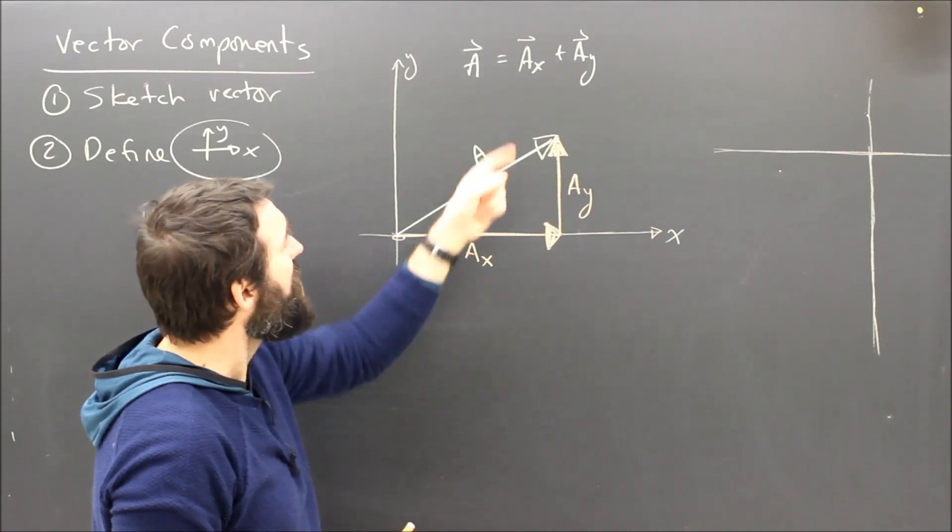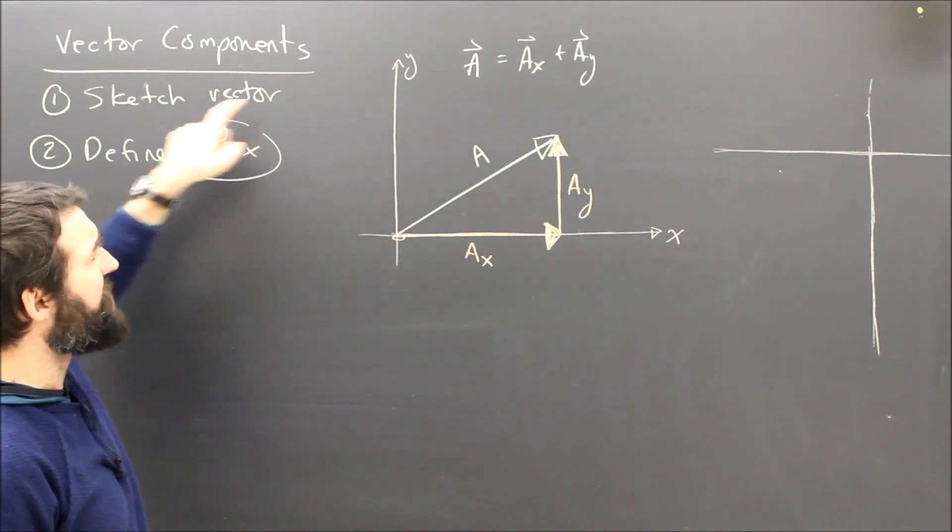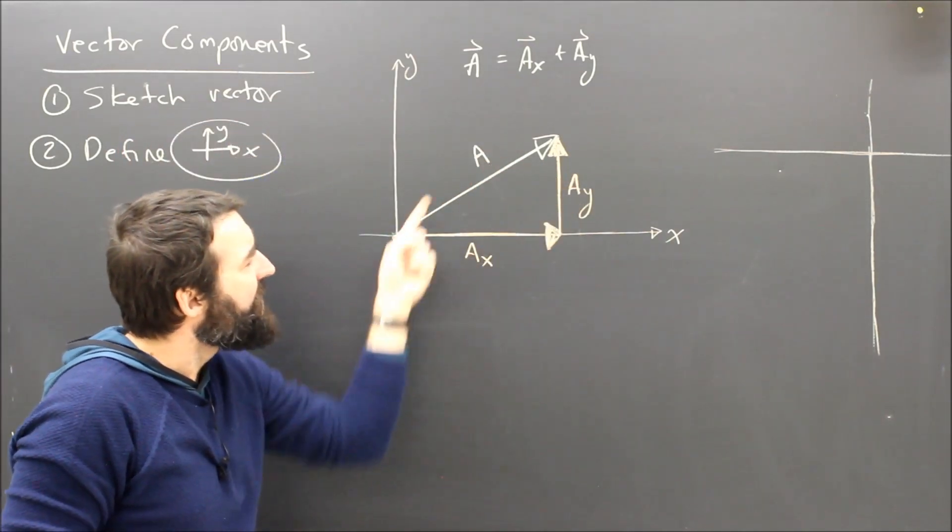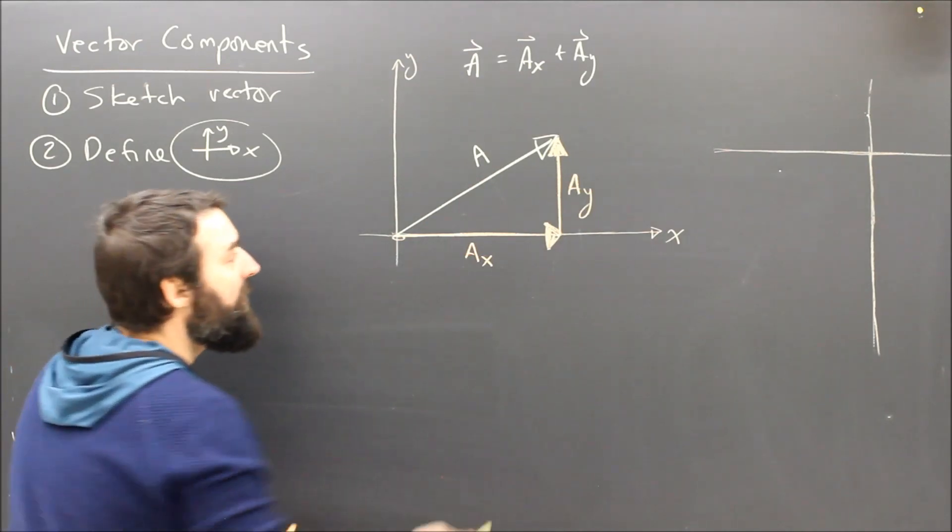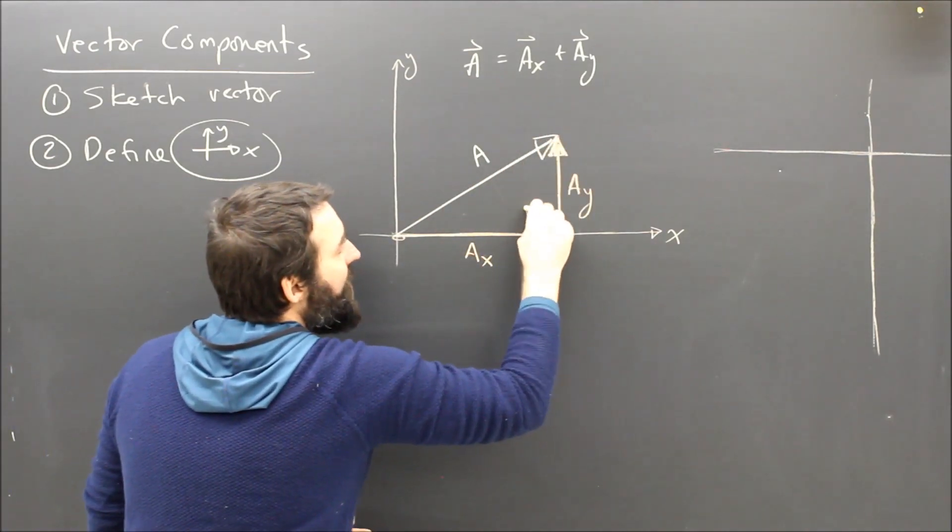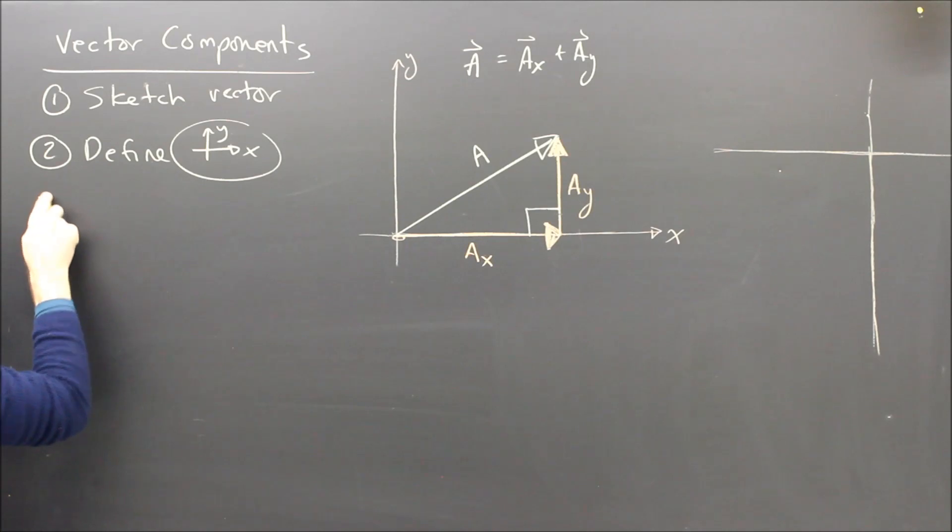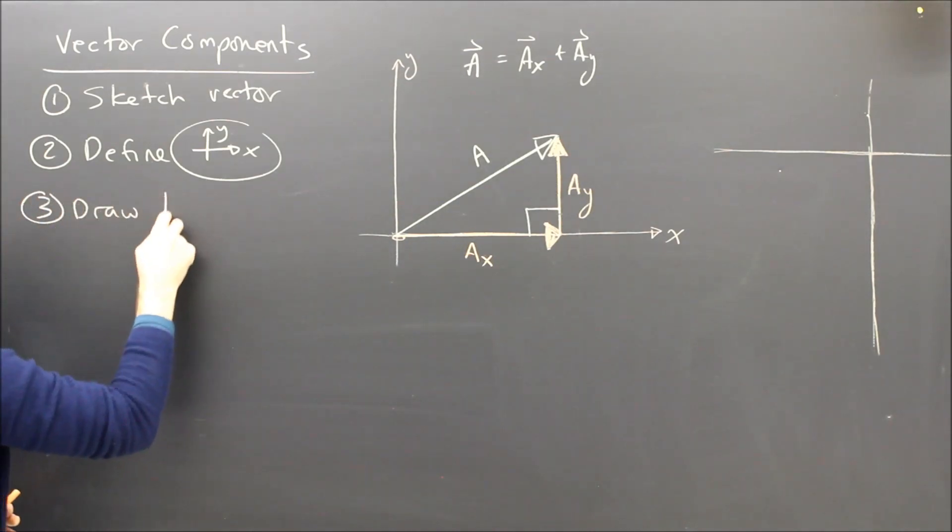Okay, back to components. So the first step was to sketch the vector. Then we defined x and y. Now can you see how I made a triangle? I made a triangle, but not any old triangle. It's a right angle triangle. So step three is to draw a right angle triangle.